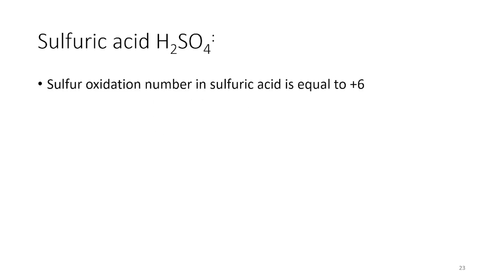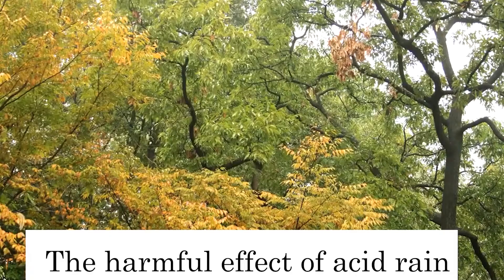The oxidation number of sulfur in sulfuric acid, H2SO4, is equal to plus 6. As mentioned earlier, sulfuric acid is a very corrosive acid that is considered the main cause of acid rain.